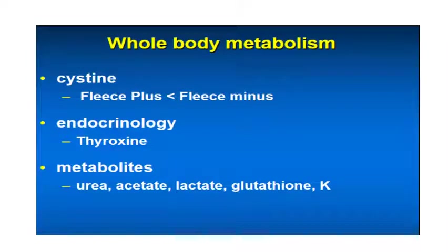The effect of whole-body metabolism on wool growth involves three aspects. First, cysteine metabolism — cysteine is a very important sulfur-containing amino acid. Good cysteine metabolism leads to better fleece, while poor cysteine metabolism results in reduced wool growth. Second, endocrinology: hormones such as thyroxine play an important role in metabolic processes and influence both wool fiber growth and quality. Third, metabolites such as urea, acetate, lactate, and glutathione — an antioxidant against free radicals — also have important roles in wool fiber growth and quality.